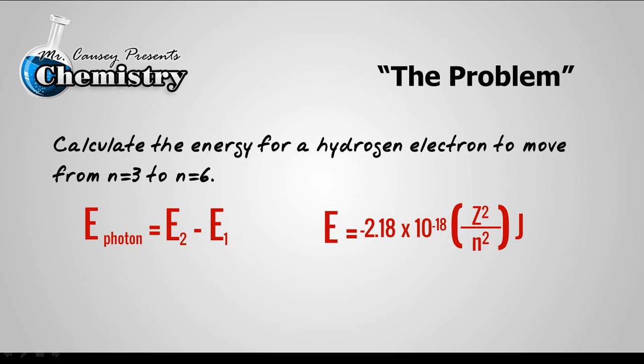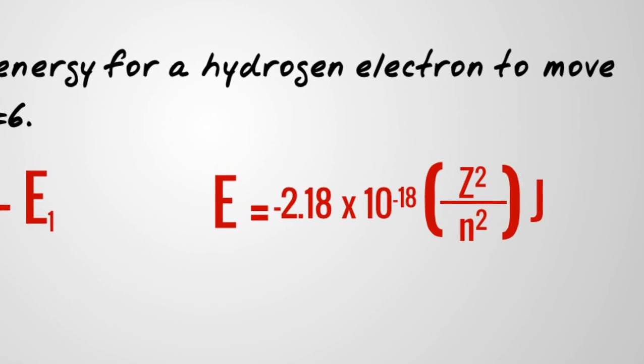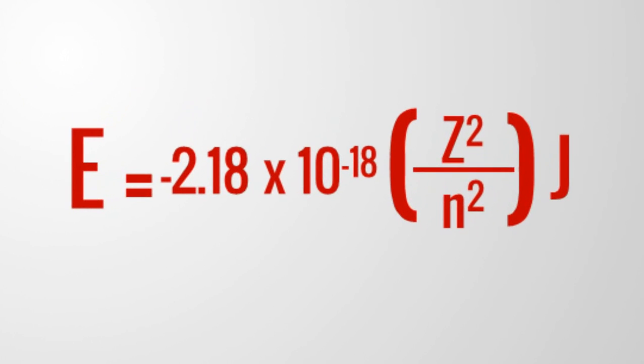And we get the equation that Bohr used to figure out the energy levels of hydrogen. It's true that this equation only works for hydrogen or hydrogen-like atoms, and when they get to the larger atoms, it's not as useful.